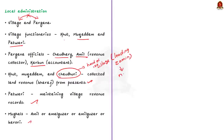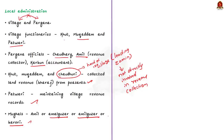The Mughals who came after the sultans retained many features of this administrative system. For example, even during Mughal rule, Amil was the revenue collector but was also called Amal Guzar or Amil Guzar or Karori. The revenue collector's role was to assess and supervise revenue collection and to increase land under cultivation. Many features of the Sultanate administrative system were retained by the Mughals. These are the few points you need to know about Delhi Sultanate and their administrative system.